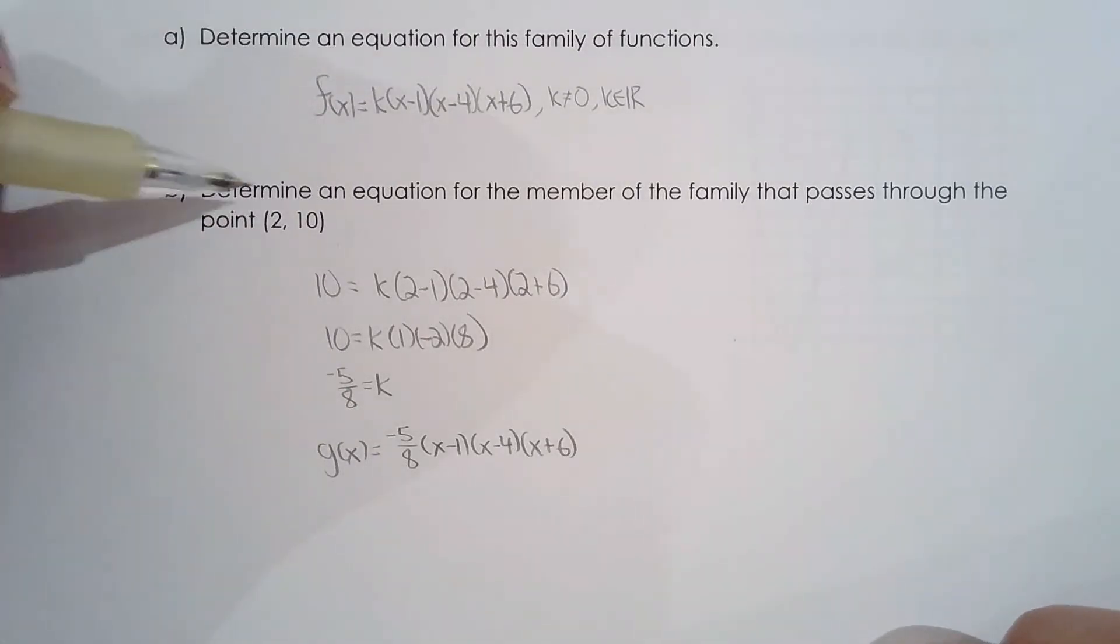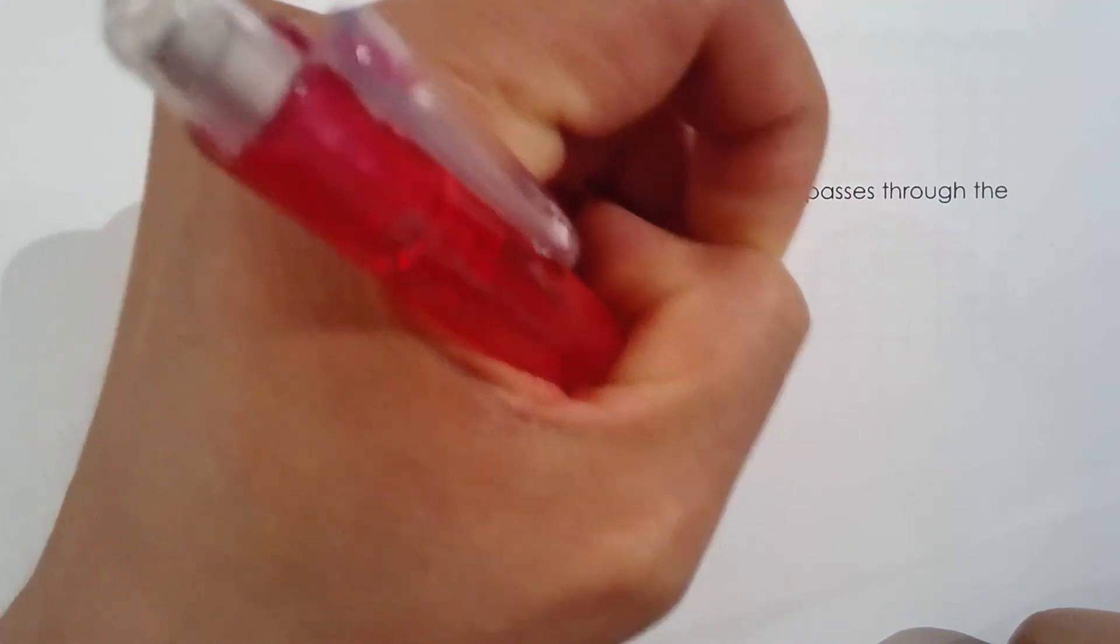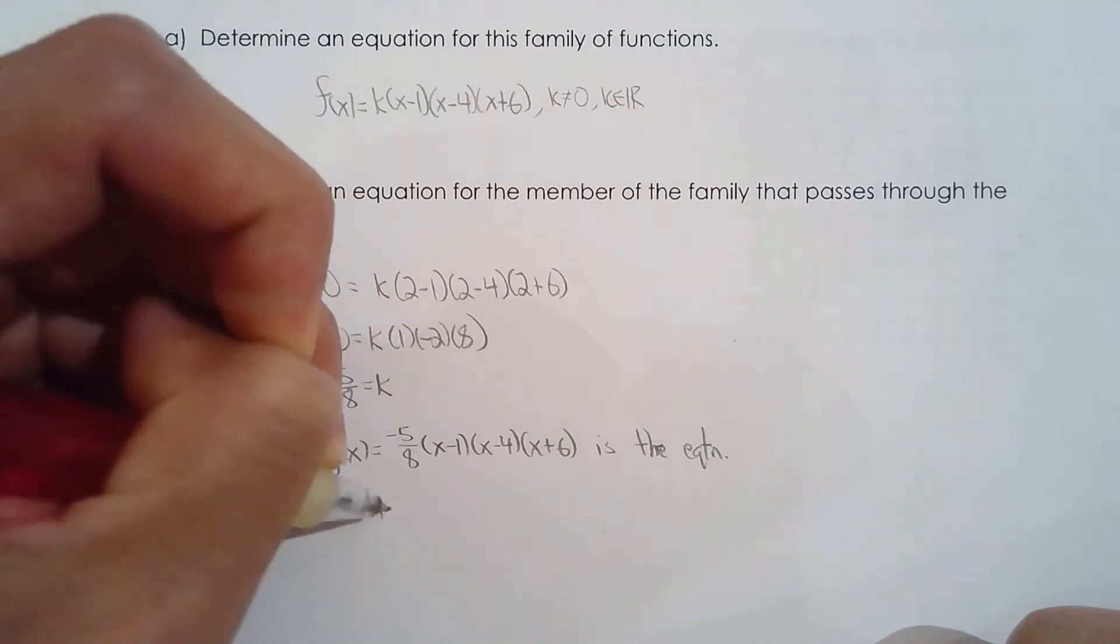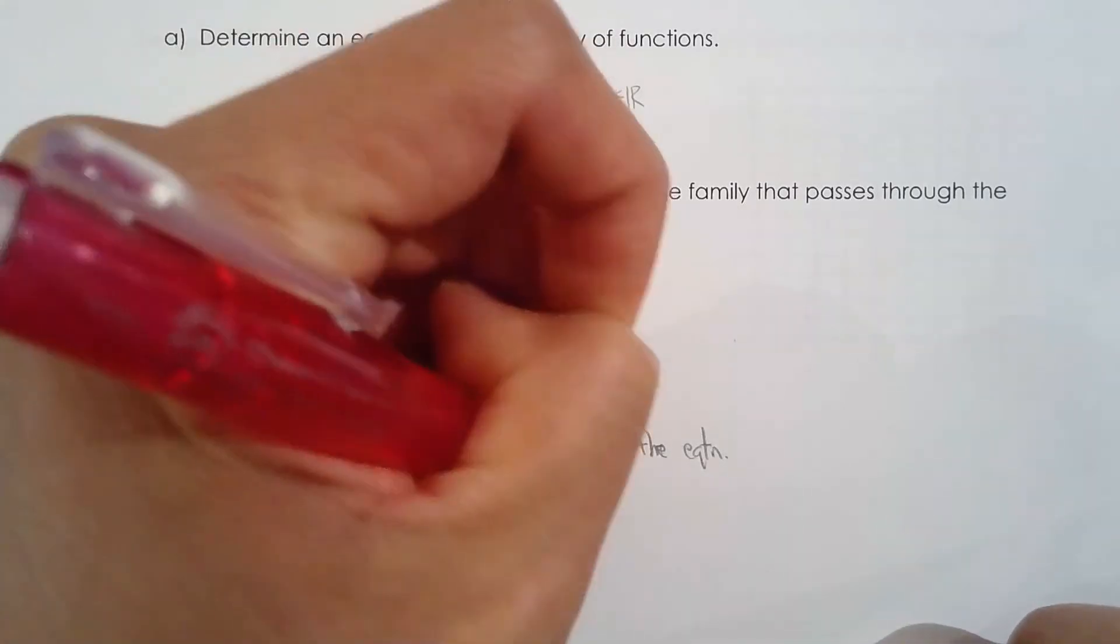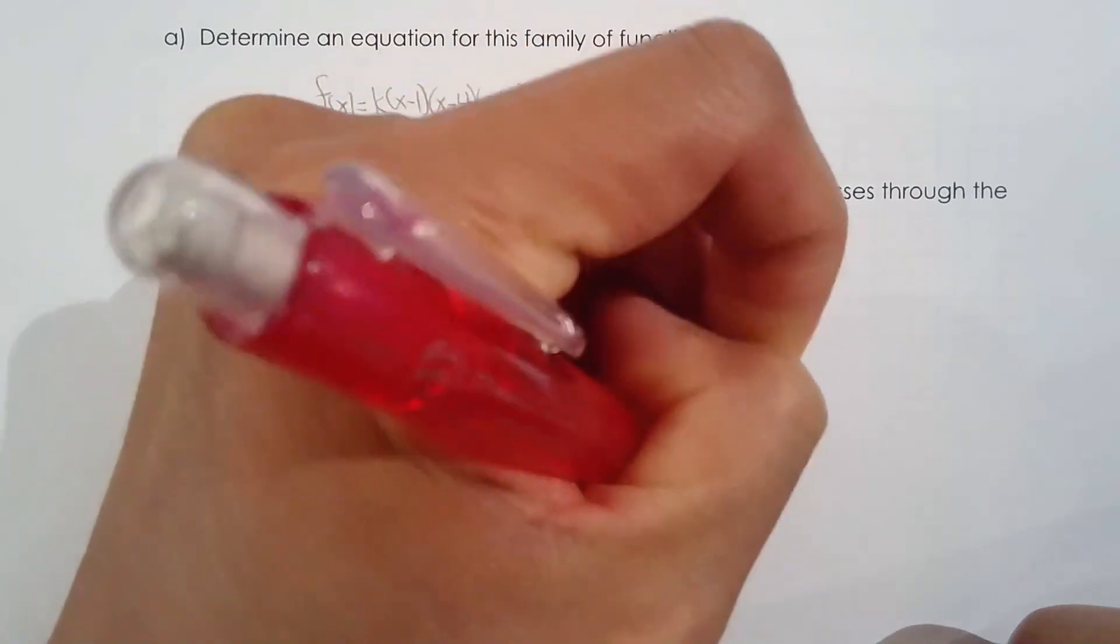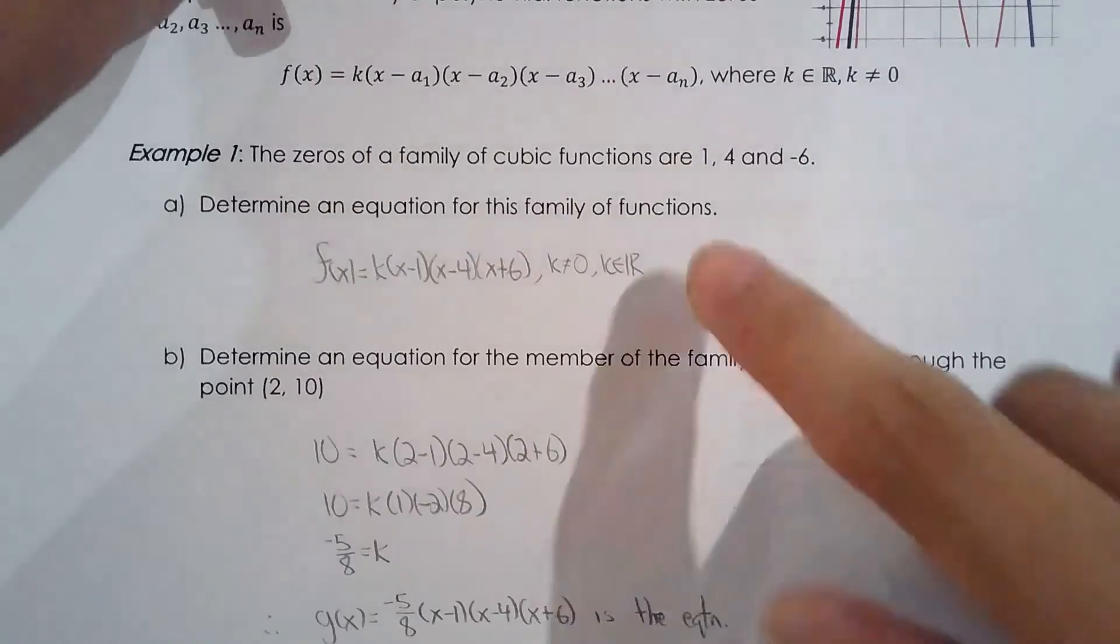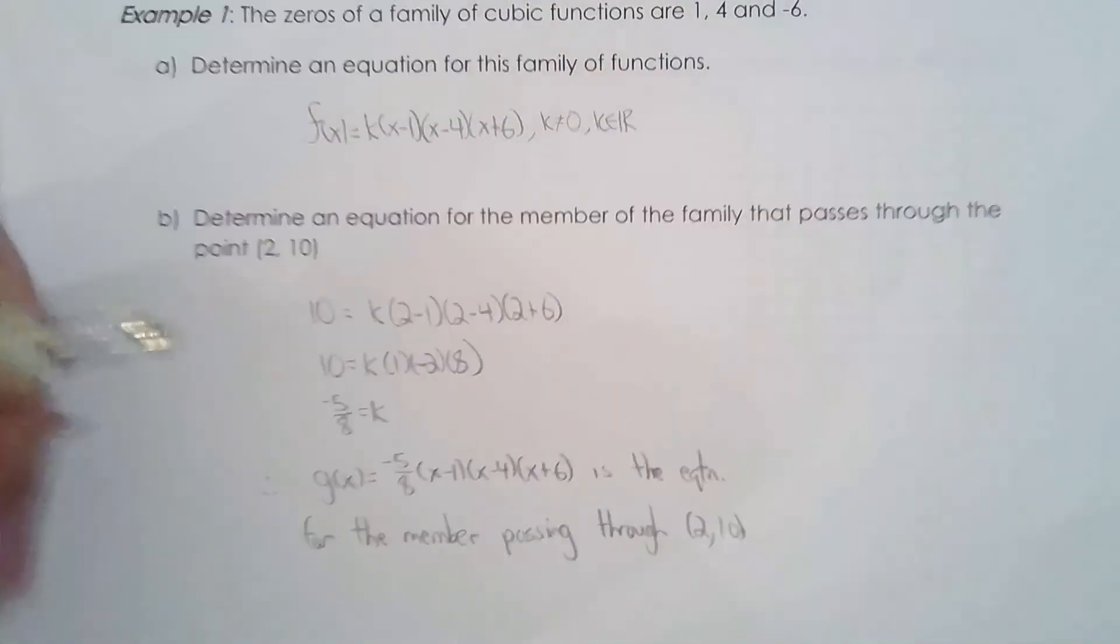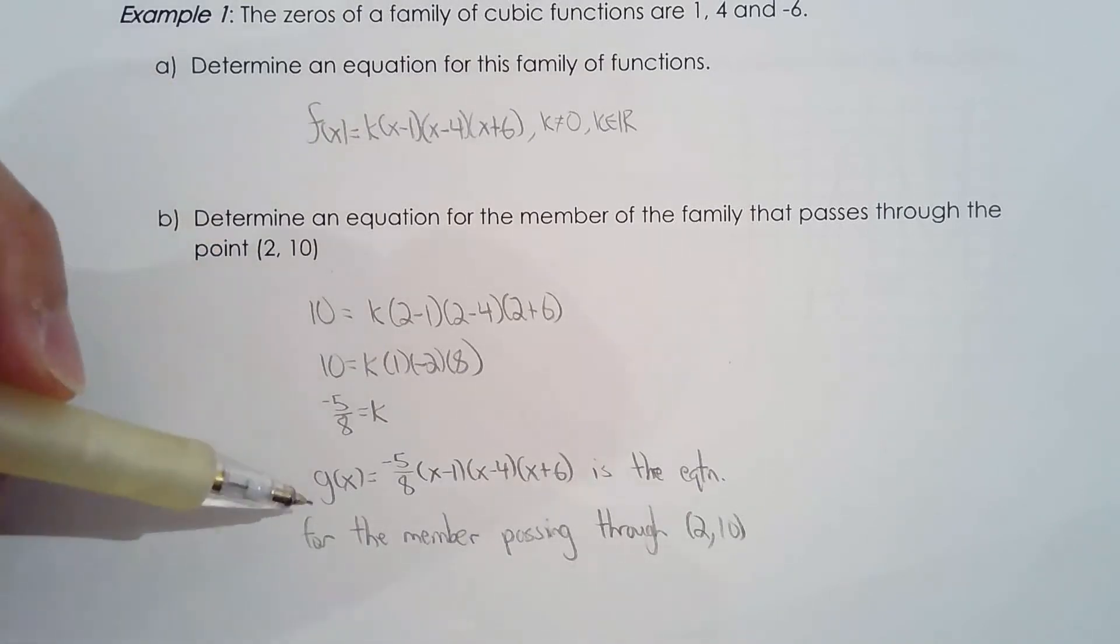So this lesson is a good break because the previous lessons have been quite intense with the algebra. So this lays it off a little. We're taking a nice break in the unit. So this is the equation for the member passing through two, ten. We'll go from family of functions to the member of the family. And I chose to use g of x to represent the member because I chose f of x for the family. Please try not to use the same letter because it is a little confusing. That's like your brother and your sister and your uncle all have the same name. It's very confusing. There's no need to confuse yourself like that. Just use a different letter.